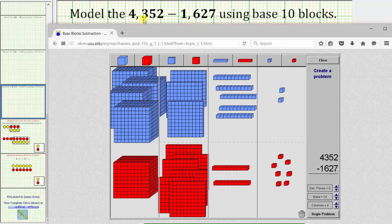We will model 4,352 minus 1,627 using base 10 blocks. Using the online base 10 blocks, we first model 4,352 by using four cubes for 4,000, three flats for 300, five rods for 50, and two units for two.